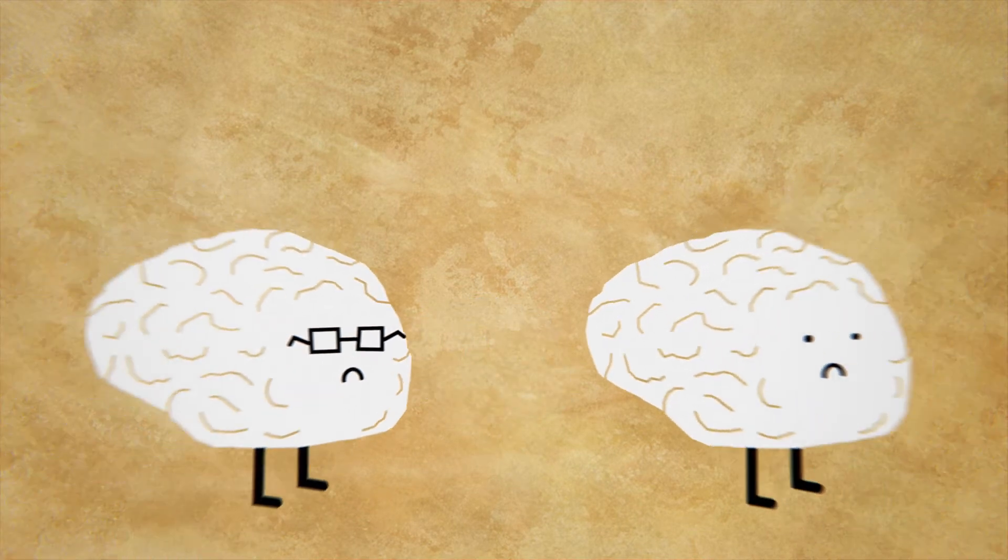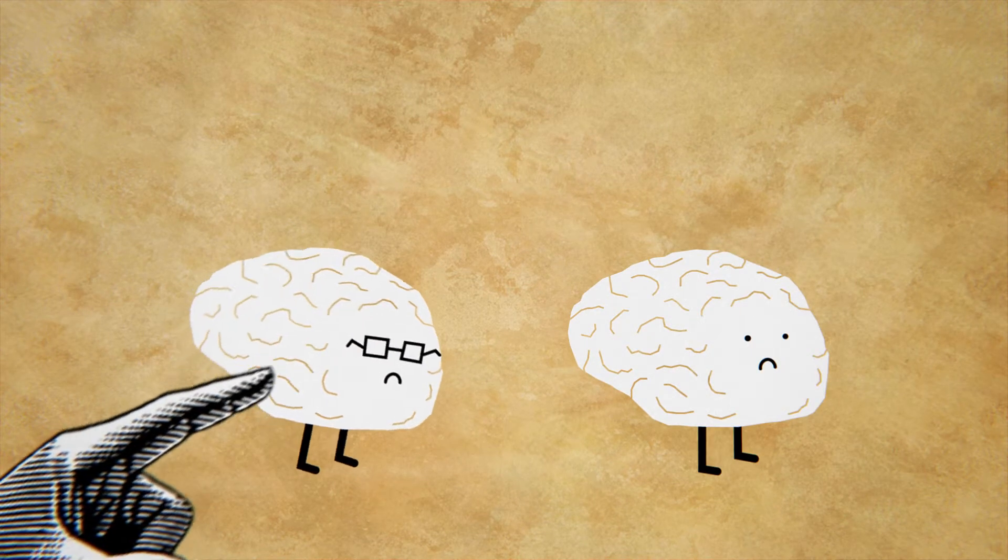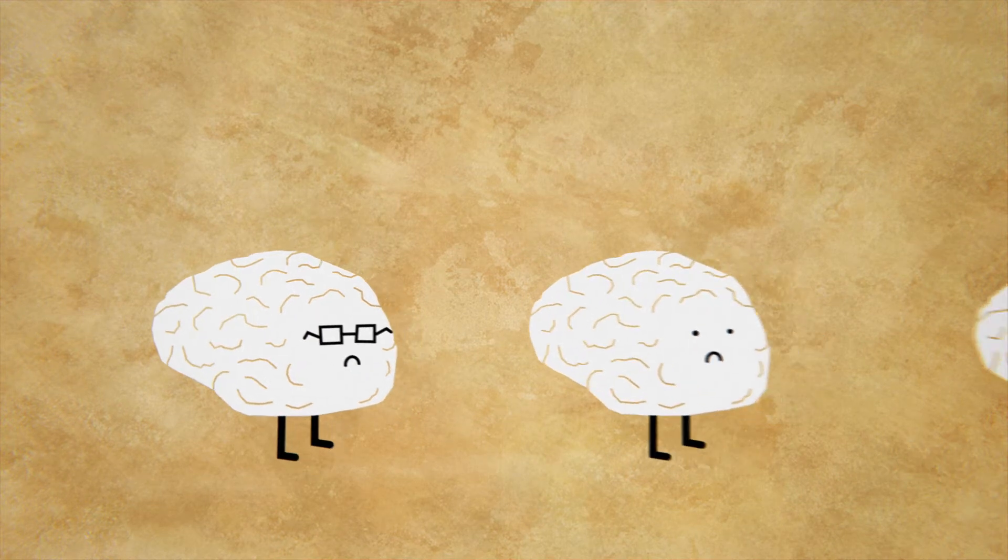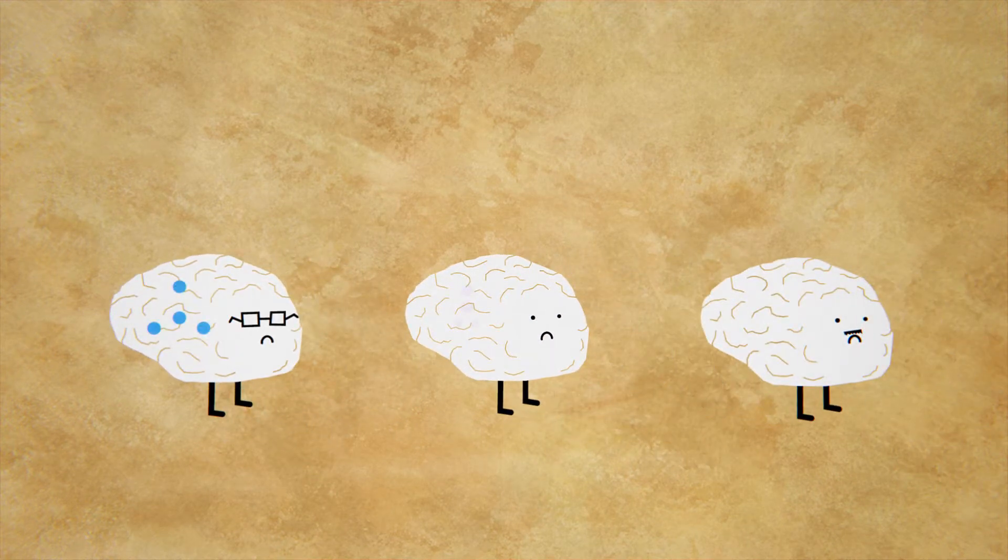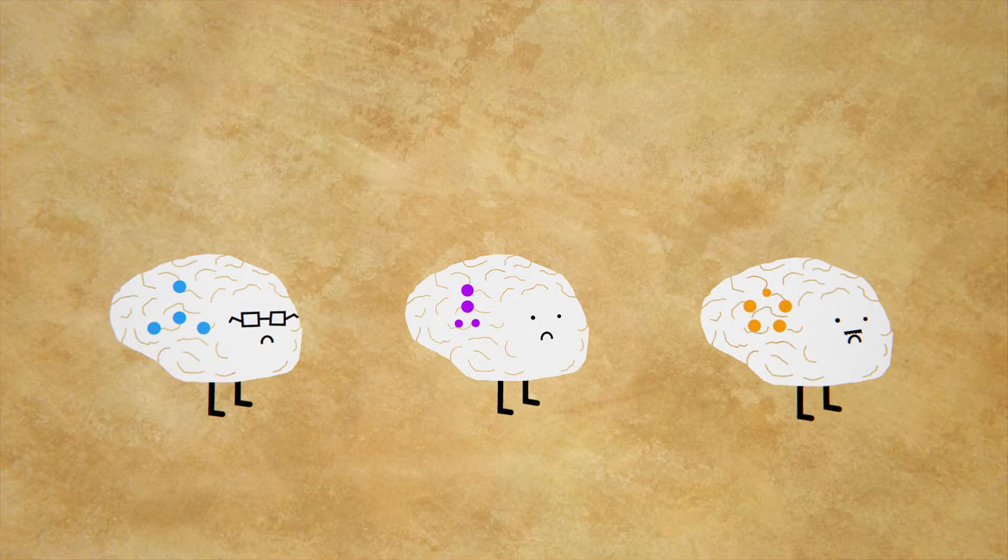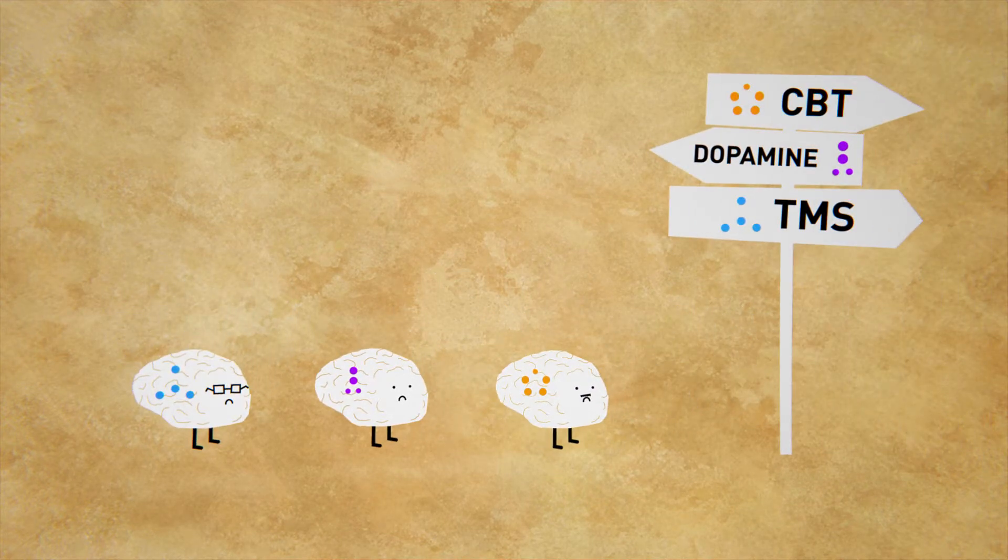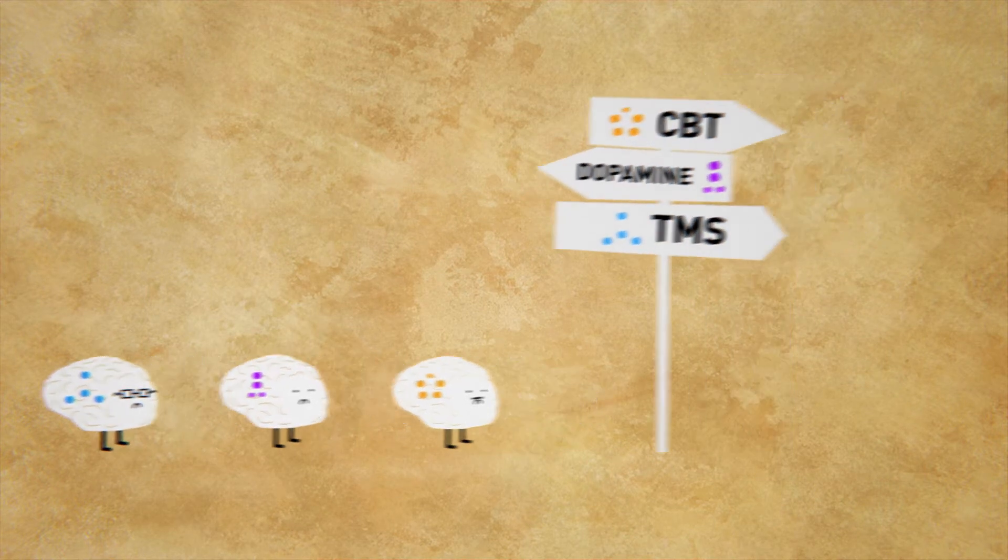No two brains are the same. One brain might respond to certain medications and therapies, but another might need a whole new treatment. By precisely identifying the type of short circuit in the brain, we can design customized treatments and preventions to target that specific short circuit.